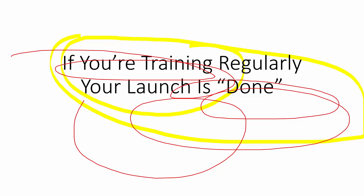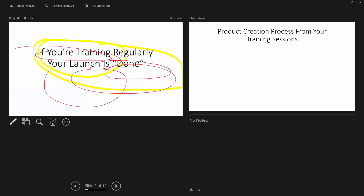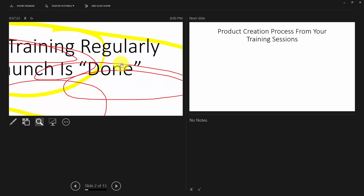We can also zoom in on a certain aspect of the screen, and we can do that with the magnifying glass. All we would do is click the magnifying glass, find the place we want to zoom in on, and zoom in. To take the magnifying effect off, we'd zoom out.